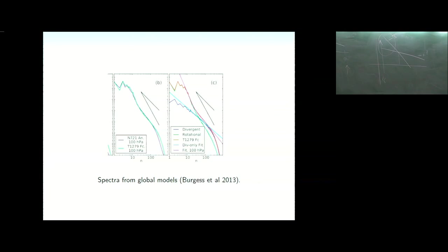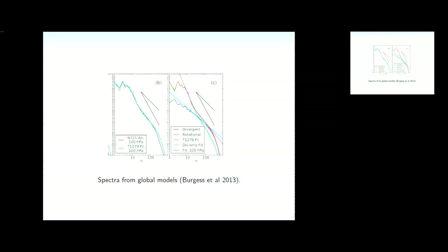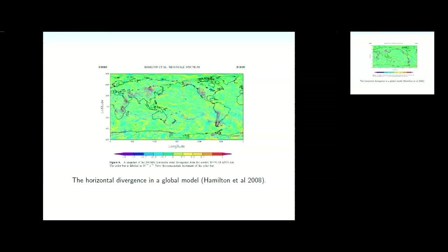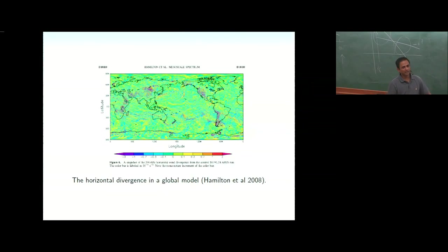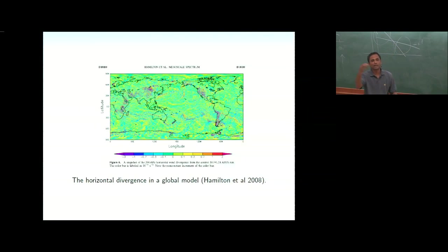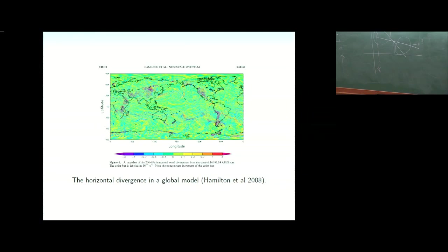There is debate: some claim the divergent part is too small compared to the rotational part, and the entire spectrum should be explained by rotational modes alone — purely QG theory with some modification. These are credible alternative lines of inquiry.